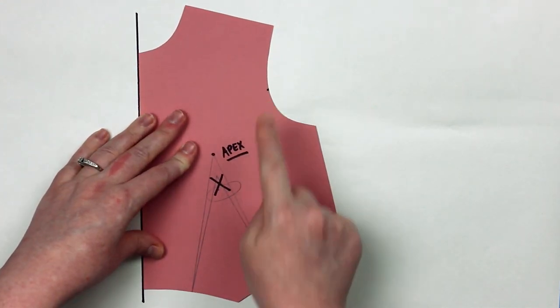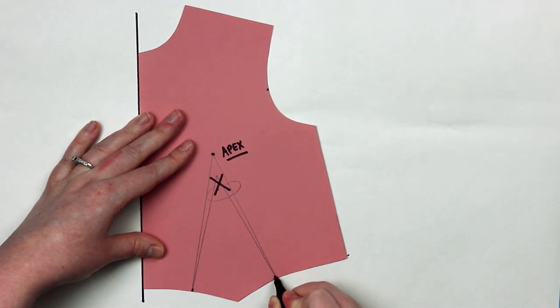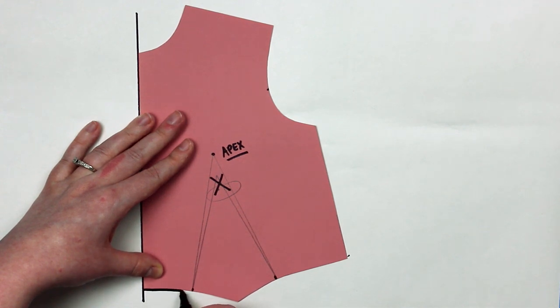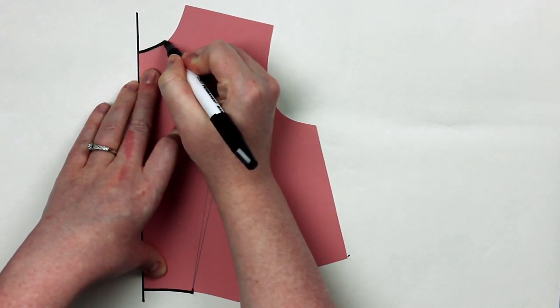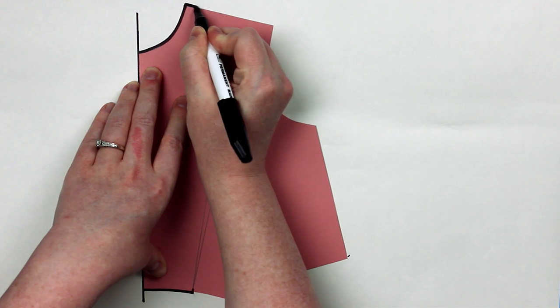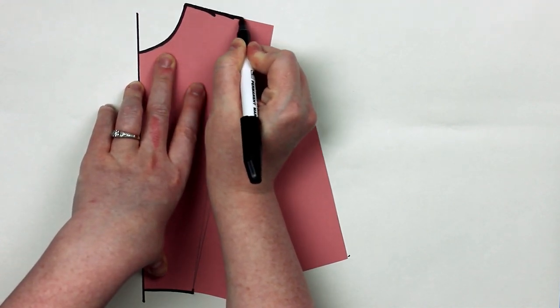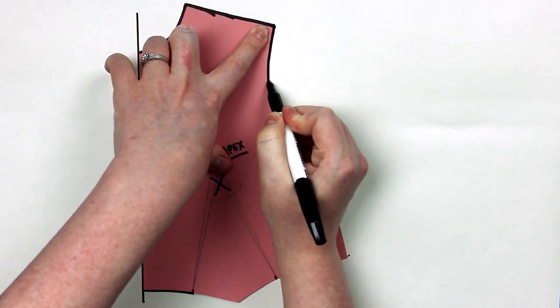The first thing we're going to do is trace around our pattern piece, but we're not going to trace the entire thing. We're going to start at the center front waist and draw from there to our first dart leg, and we're going to stop - we're not going to trace off any of the dart intake because we don't want this dart, we want our new dart. Then we're going to go up to the neck and start at center front as well, and trace all the way around our pattern piece until we reach the point of our new dart location, and then we're also going to stop there.